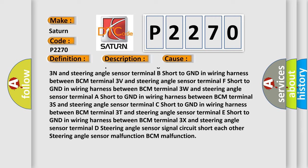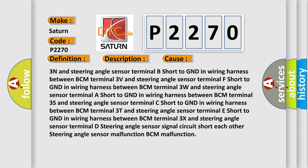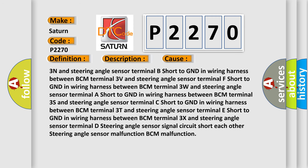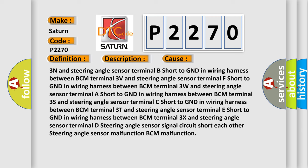Short to GND in wiring harness between BCM terminal 3T and steering angle sensor terminal E; short to GND between BCM terminal 3X and sensor terminal D; steering angle sensor signal circuit short each other; steering angle sensor malfunction; BCM malfunction.